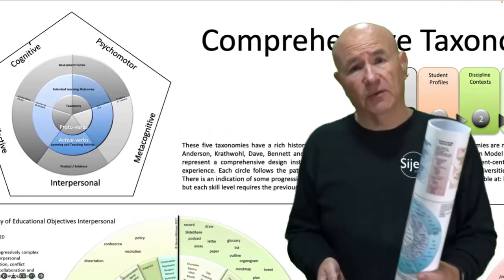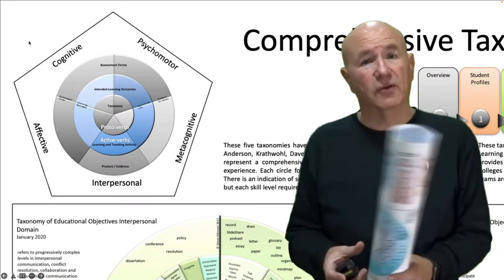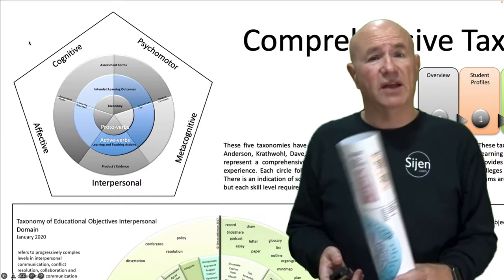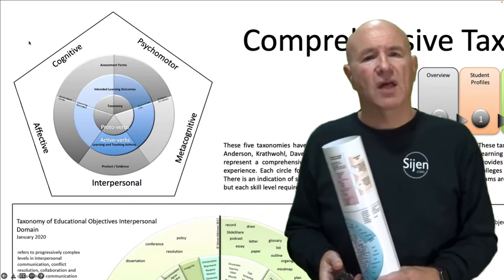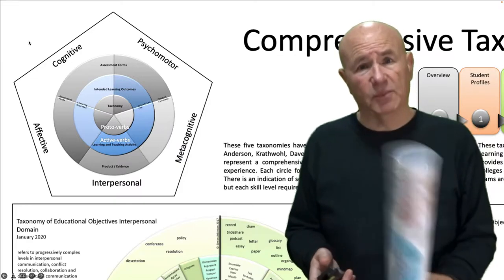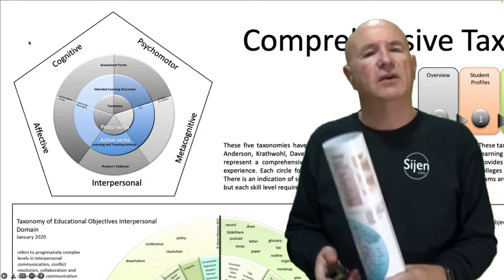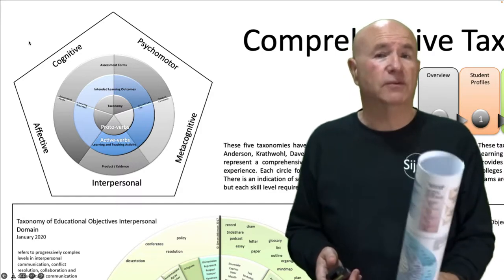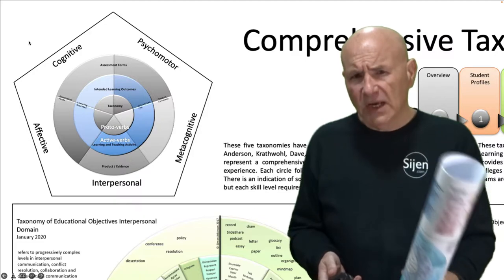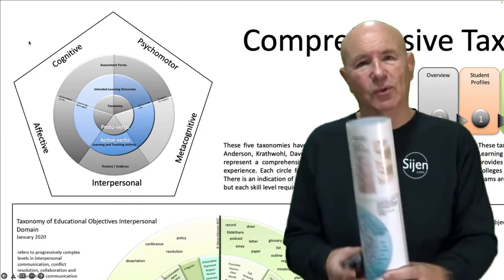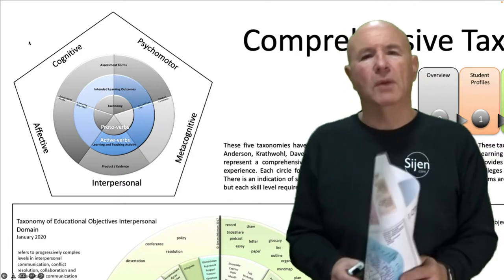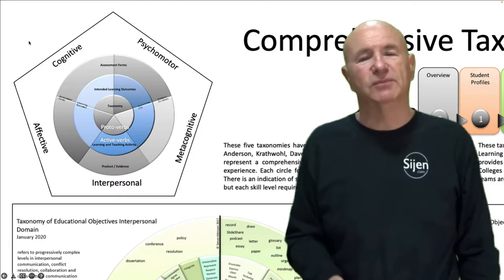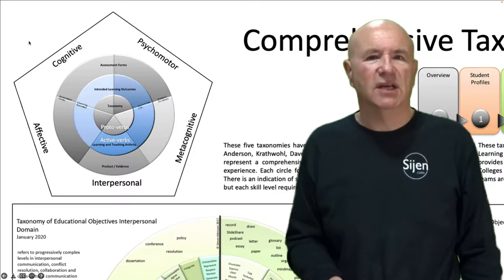These circular forms have proto-verbs at the center, some of which will be familiar to you and others may be less familiar. There's then a whole series of active verbs to support those meta-verbs, and on the outer circle there are any number of assessment forms or evaluation forms. The poster is available in its physical form, but I'm going to talk through what it looks like in terms of the digital representation of it online.